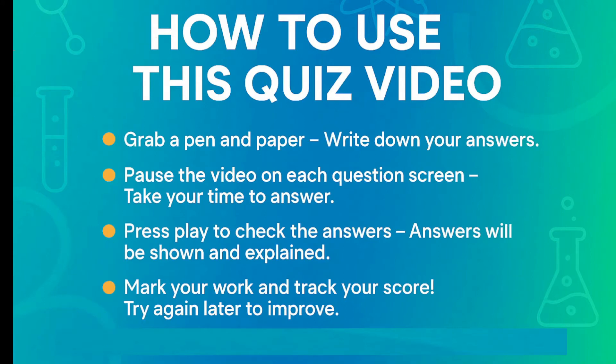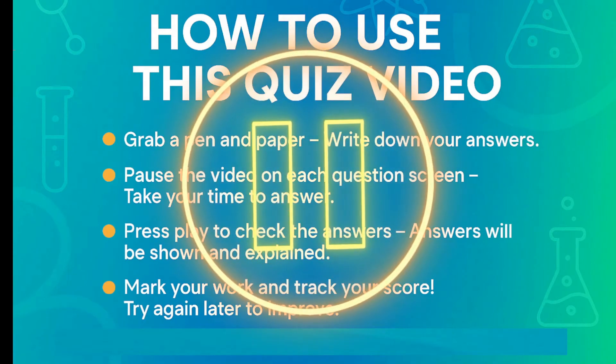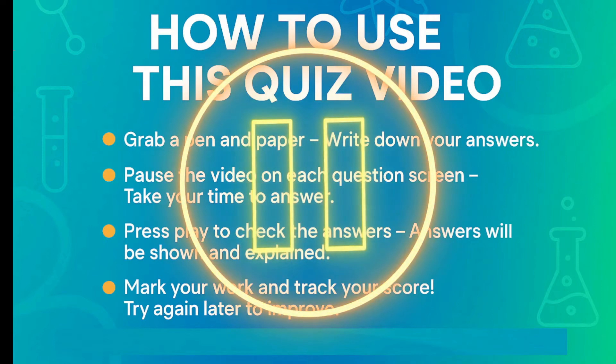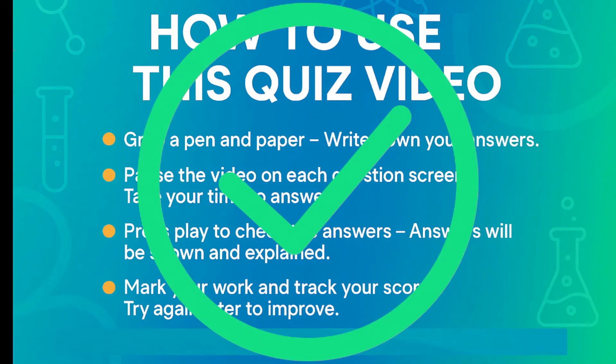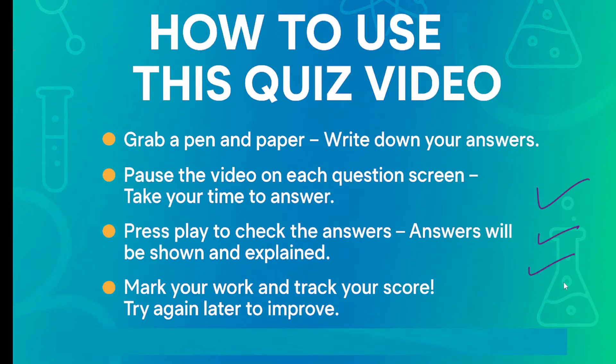Pause the video when questions come up on the screen and write the answer to the best of your ability. When you are happy to check the answer, press play and pause it again, and you can quickly check when you mark your answers. I suggest that you use two different colors, so I would suggest a purple pen for marking. If you get it right, just put a tick. If you did not get it right, just put a small cross and then use a different color. Ideally, a green pen to write the correct answers.